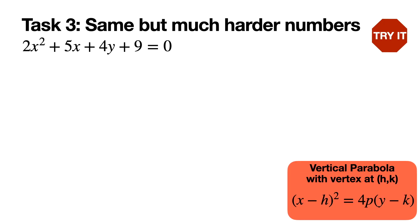Task 3 is the same conversion task but with much harder numbers — this tests whether you can complete the square when the numbers get a bit messy. Decimal answers are used here, though fractions are equally acceptable. It's intentionally presented with annoying numbers as an exercise, so try it out.